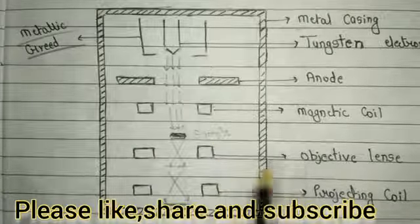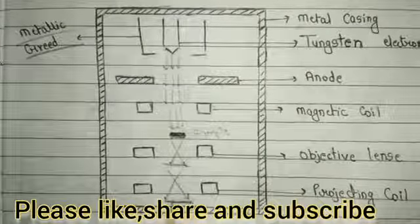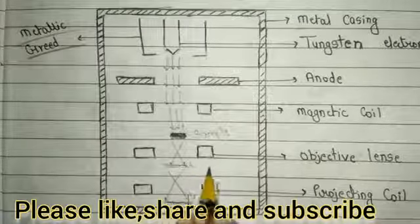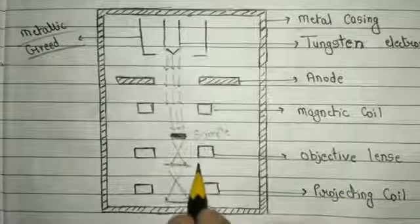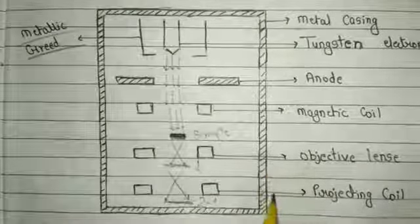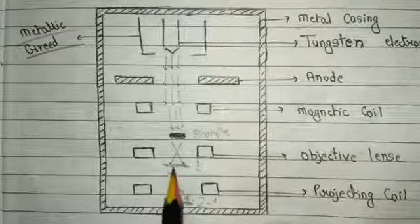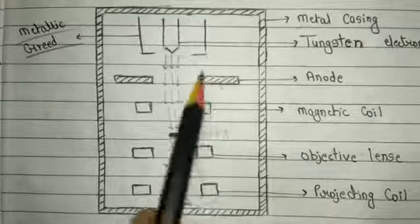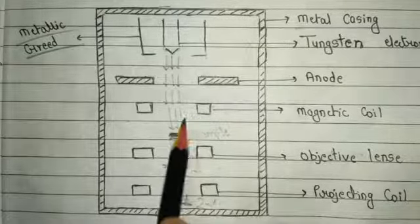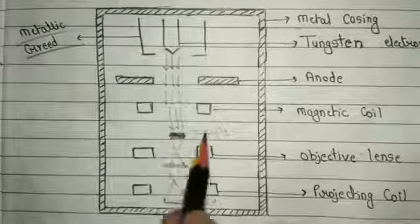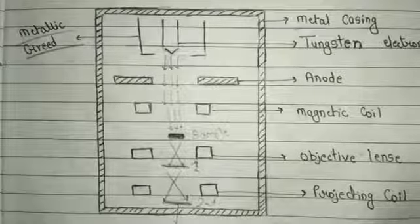The specimen is our sample. The objective lens gives us the first image, and the projecting lens gives a second image with higher magnification power. In summary, the electron source produces the electron beam, the anode accelerates it, the magnetic coil focuses the beam toward the sample, and we get the first image and then a second image with high magnification.